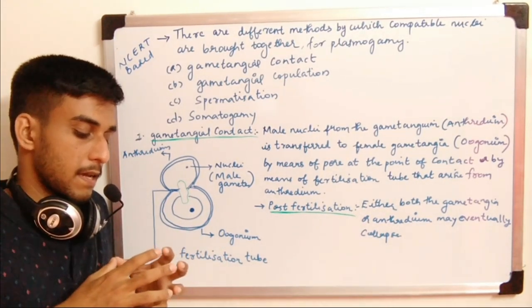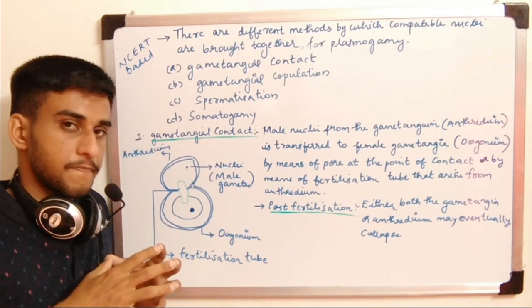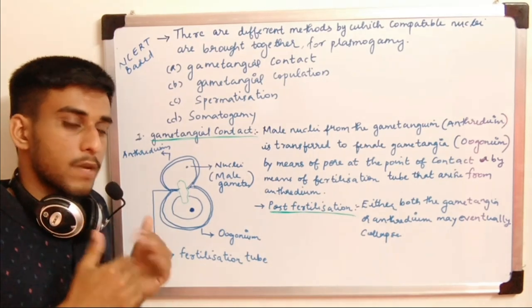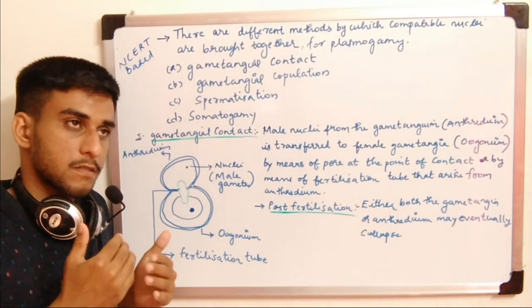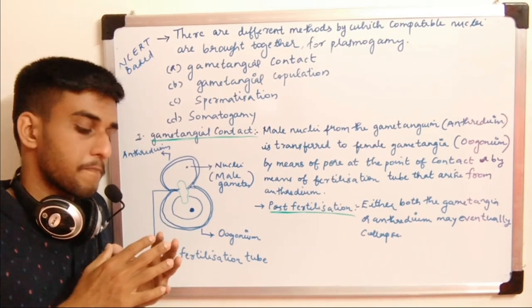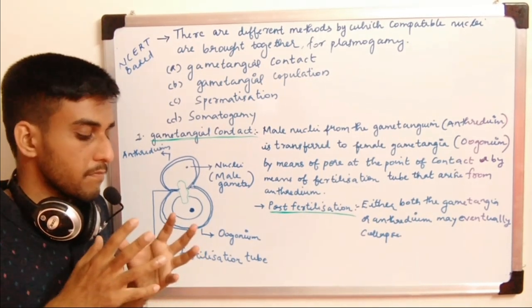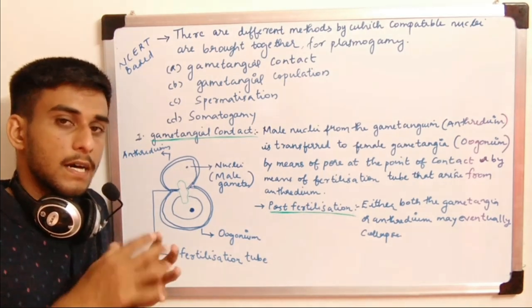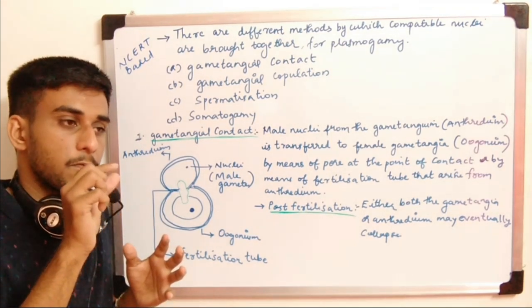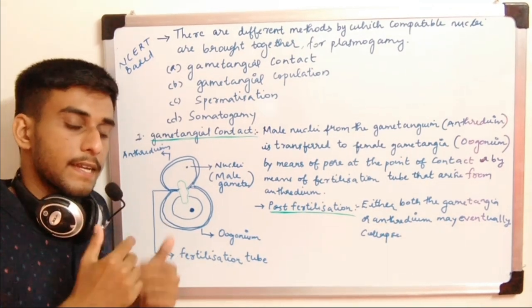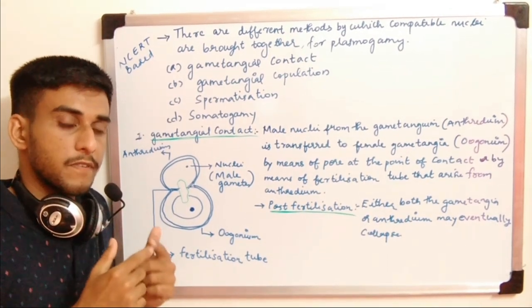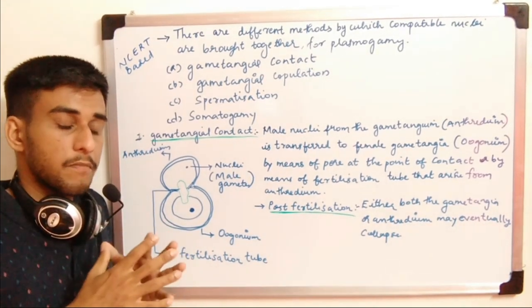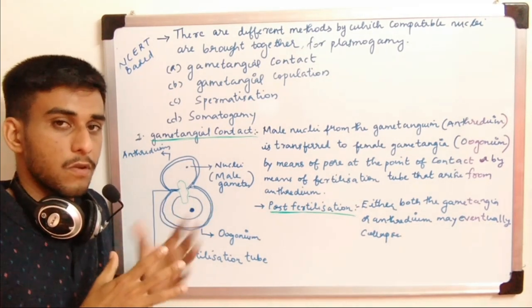At the point of contact there occur two cases. The first case is that the transfer of nucleus or protoplasm is by means of a simple pore formed at the point of contact. The second case is the formation of a fertilization tube.